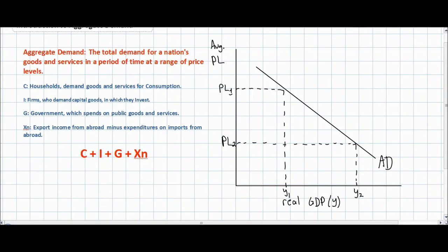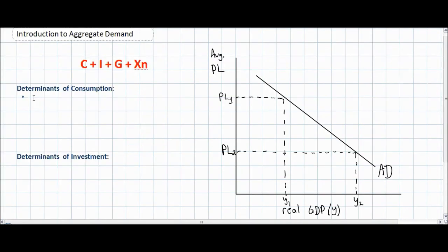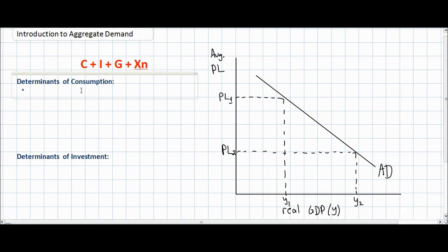A change in any of these four types of expenditures will lead to a shift in the nation's aggregate demand curve, either increasing or decreasing aggregate demand. The sum of consumption, investment by firms, government spending, and net exports gives us the total aggregate demand. This raises the question of what can cause a change in one of the components of aggregate demand, so we'll go through each component and discuss the factors that can lead to an increase or decrease.